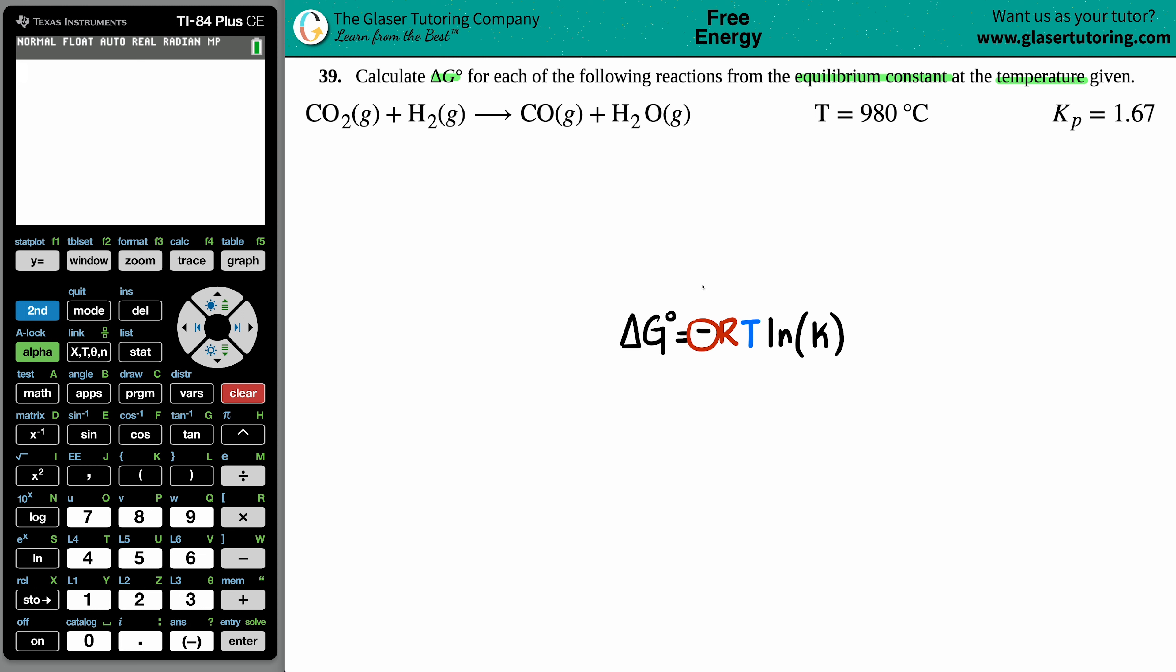The negative is in the formula, but the R value is a standard. The R value is always going to be 8.314, so that's something you have to memorize. I like to use 8.314 joules per mole times Kelvin. That's going to come into play in a little bit.